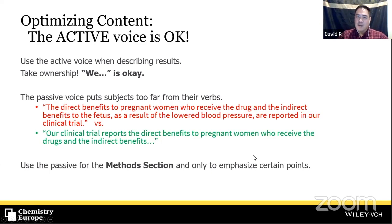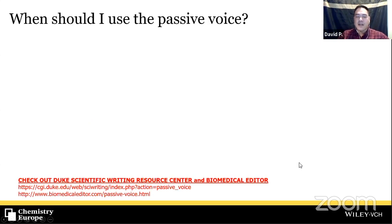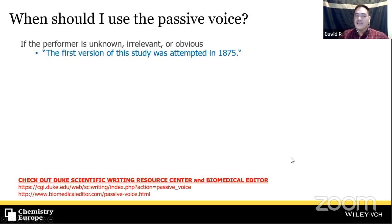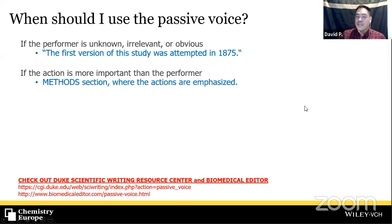When do we use the passive voice? The most common time is in the methods section, and only to emphasize certain points. According to the Duke Scientific Writing Resource Center: use it if the performer is unknown, irrelevant, or obvious — for example, 'The first version of this study was attempted in 1875.' Use the passive if the action is more important than the performer — which is why we use past passive tense in experimental sections. This also helps avoid repeating 'we' in every sentence.